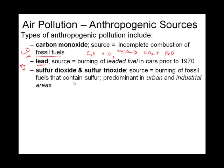Sulfur dioxide and sulfur trioxide — SO2 and SO3 — are pollutants that come from sulfur present in our fossil fuels. This is often the case when we burn coal in our factories. These compounds interact with moisture in the air, and especially SO3, can be one of the things that gives us acid rain.